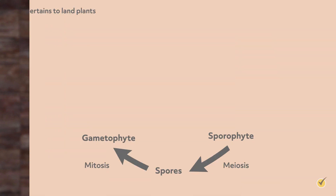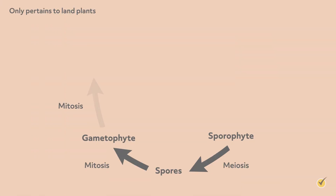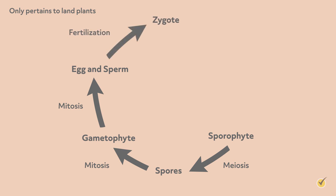So we have our haploid gametophytes. The gametophyte will produce gametes for the plant cell, which are called sperm and egg that are also haploid like animal cell gametes. Pollen is a good example of the male gametophyte. When the sperm gametophyte fertilizes the egg gametophyte, it results in a diploid zygote, from which the zygote can undergo mitosis as usual to form more sporophytes.